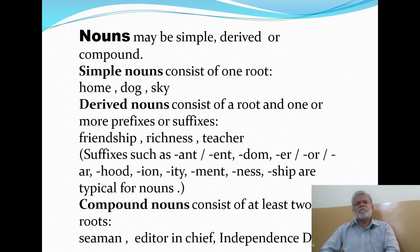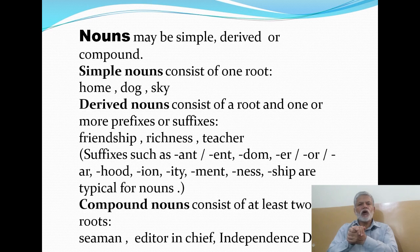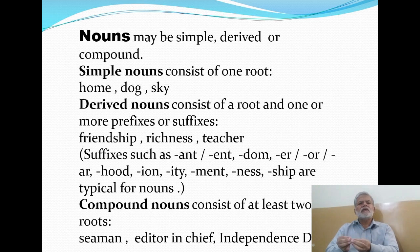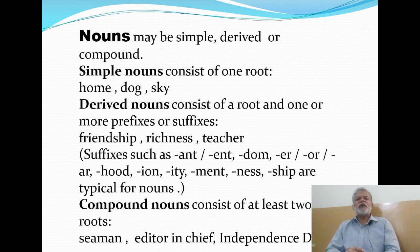Now let's look at how nouns are made — how they are derived. Nouns may be simple, derived, or compound — three categories. Simple nouns consist of one root; they are single words with only one root. For example: home, dog, sky. They are not made with the help of other nouns or words; they are complete, simple words. Then there are derived nouns, which are formed using some prefixes or suffixes.